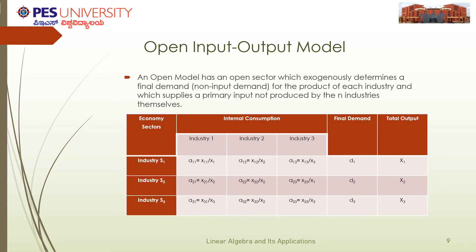Coming to the open input-output model: in this model there is one sector which exogenously determines the final demand and supplies a primary input not supplied by any of the other industries. So we have an additional column in the input-output table which is the final demand by this special industry. As we can see in the table, D1, D2, D3 are the demands of each industry which will require it.